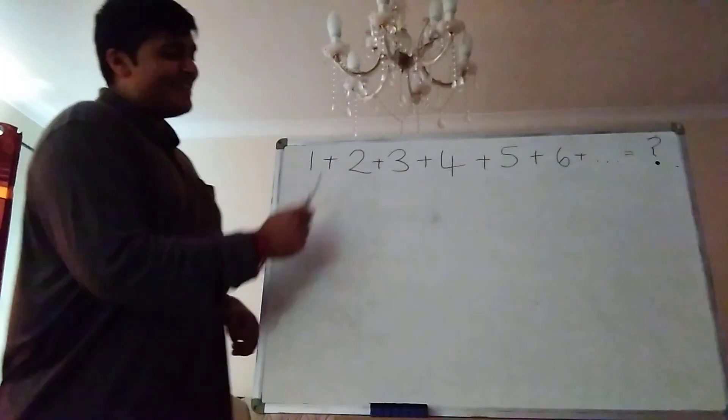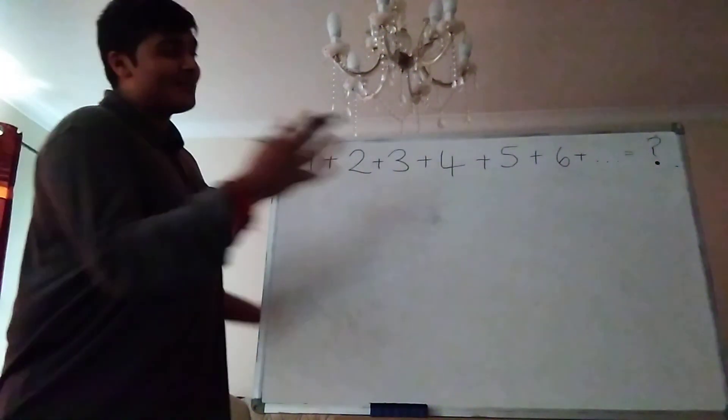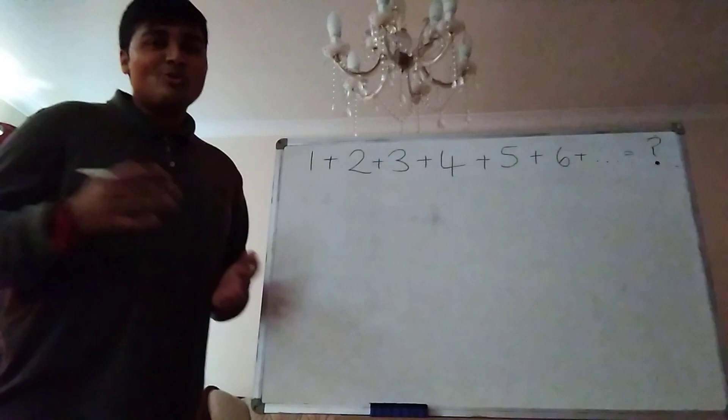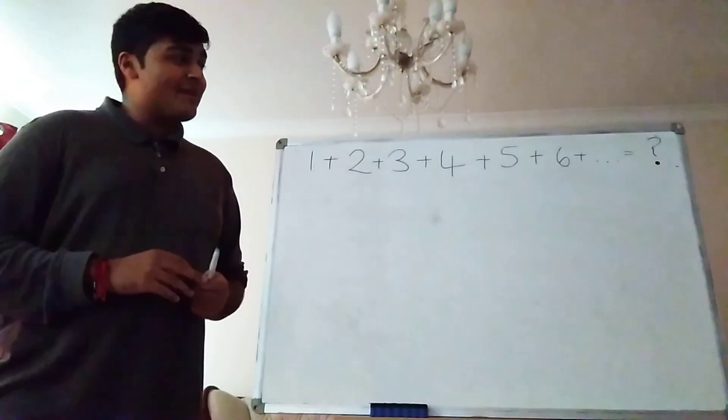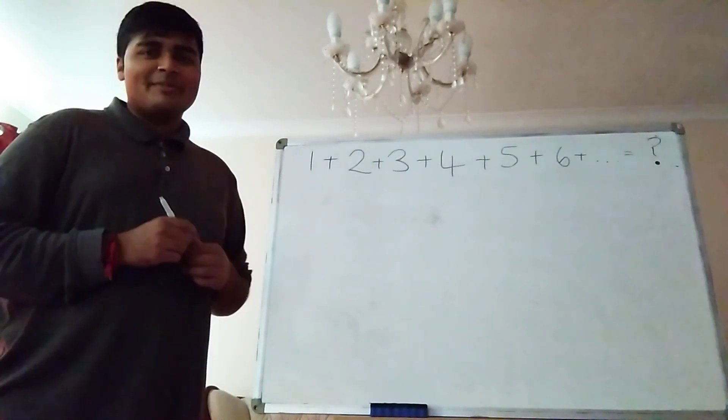I'm really looking at this bizarre sum here. 1 plus 2 plus 3 plus 4 plus 5 plus so on, adding up all the positive integers. What on earth does it equal? Now, Numberphile made a really cool video about this and the link for that will be in the description below.